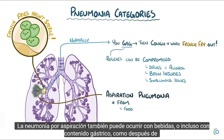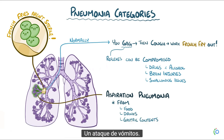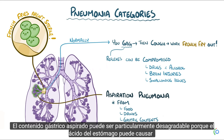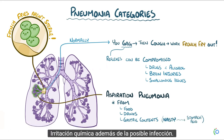Aspiration pneumonia can also happen with drinks or even gastric contents, such as after a bout of vomiting. Aspirated gastric contents can be particularly nasty because the stomach acid can cause a chemical irritation in addition to the possible infection.